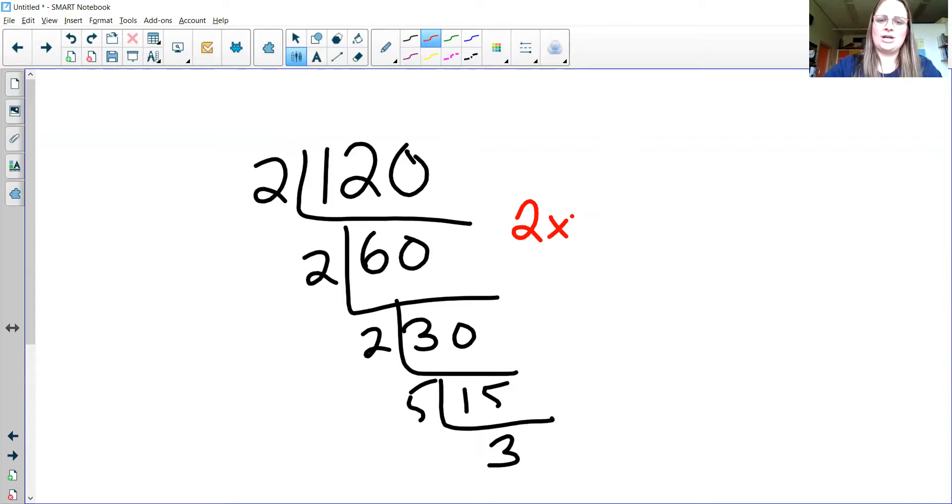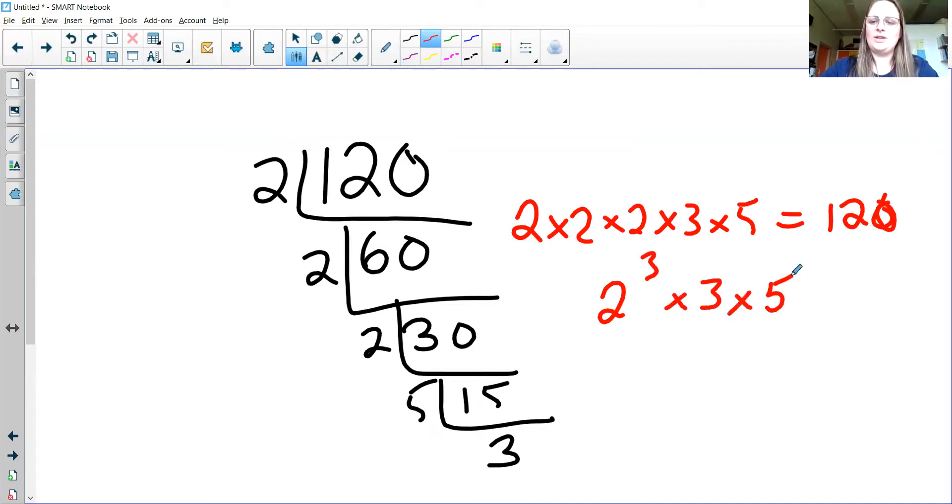So write in numerical order: two times two times two times three times five equals 120, or in condensed form 2³ × 3 × 5 = 120. I hope that went well for you.